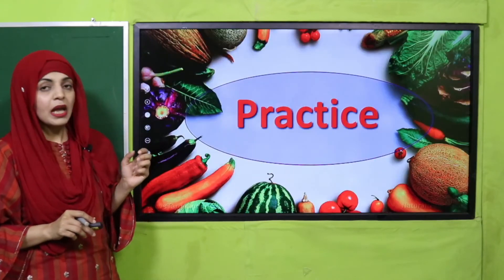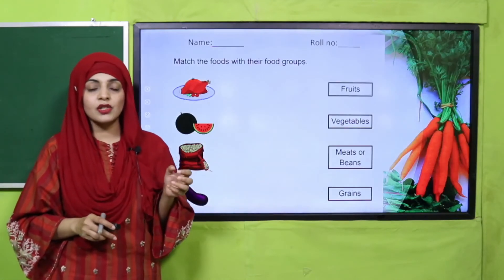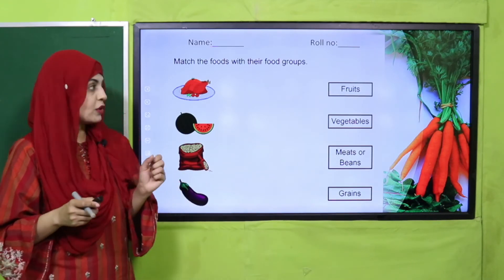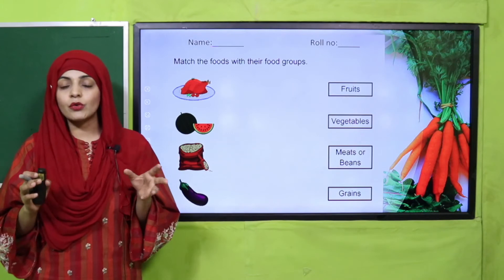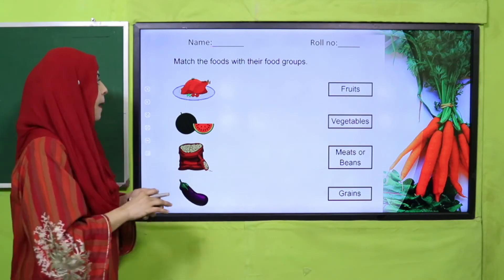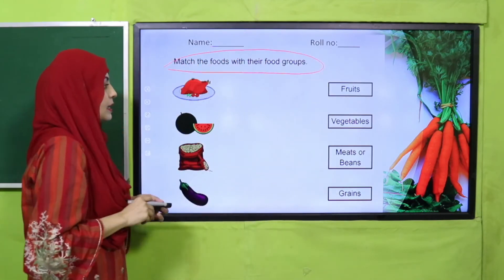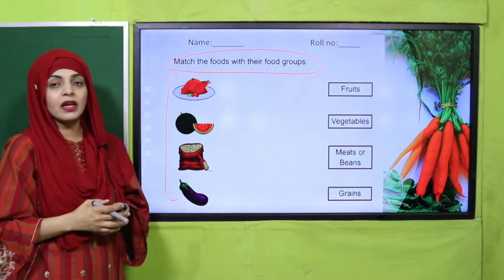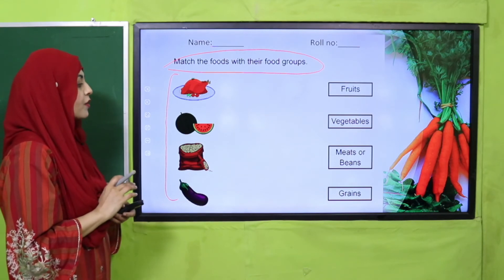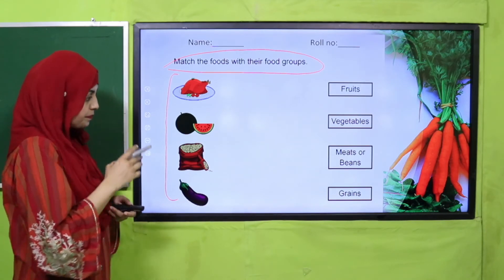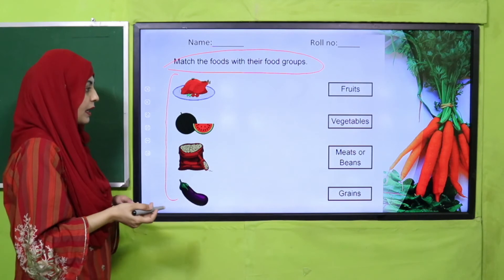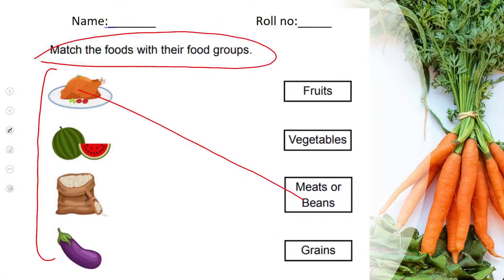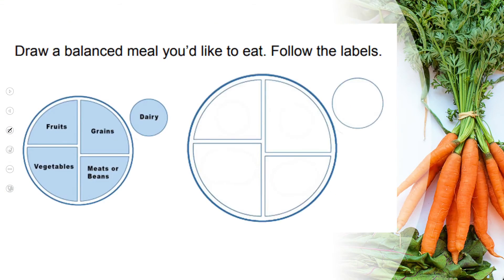Now is the time for practice. You can download this worksheet from the description box below this video, or get a printed copy from your teacher. Write down your name and roll number, then match the food with their food groups. For example, meat should be matched with the meat group, and grains matched accordingly.